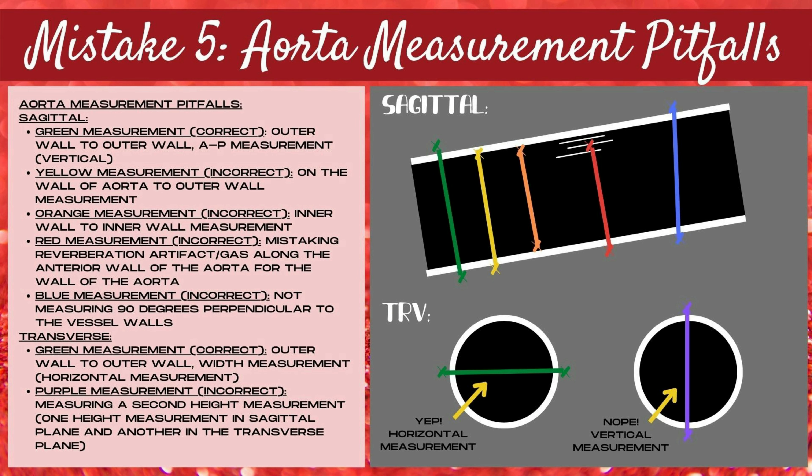Mistake number five when imaging the aorta is pitfalls when measuring the abdominal aorta. First, let's talk about the sagittal plane. The green measurement is a correct measurement — this is an outer wall to outer wall AP or height measurement, which is a vertical measurement on the ultrasound image. The yellow measurement is incorrect; this is measured from the inner wall to the outer wall of the aorta, which shortens the height.